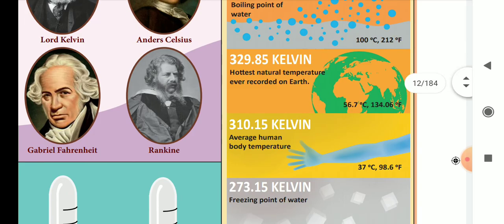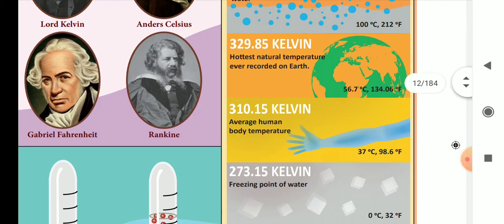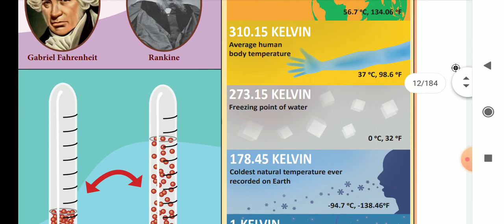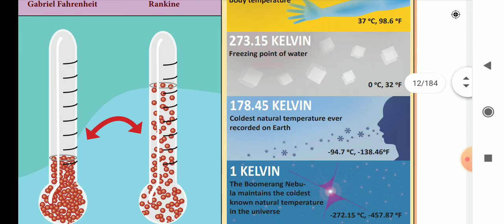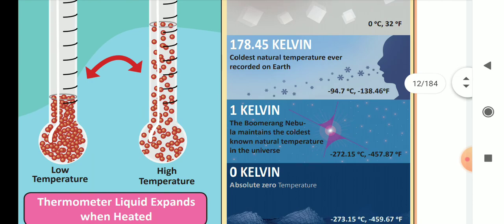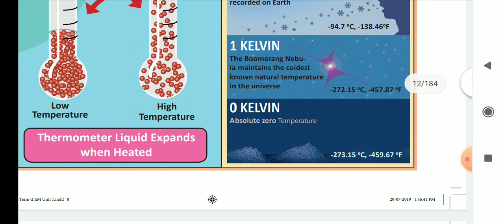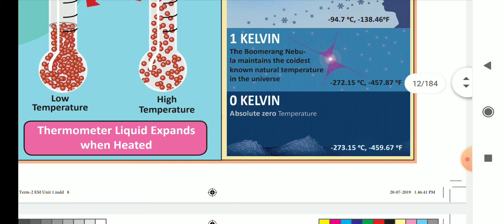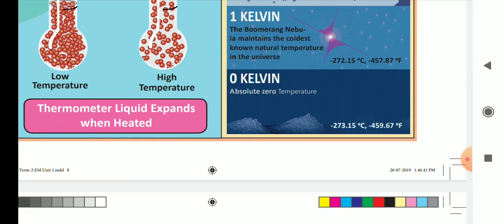The hottest natural temperature recorded on earth has been measured. Absolute zero temperature, the coldest possible temperature, is 0 Kelvin, or minus 273.15 degrees Celsius.